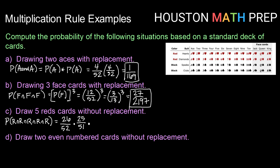For the third draw, it is dependent on the first two: 24 red cards out of a total 50 in the deck. For the fourth draw, there are 23 left out of 49. For the last draw, there are 22 red cards out of 48 in the deck. So doing that multiplication: 26 times 25 times 24 times 23 times 22 on top gives us 789,360, over 52 times 51 times 50 times 49 times 48.